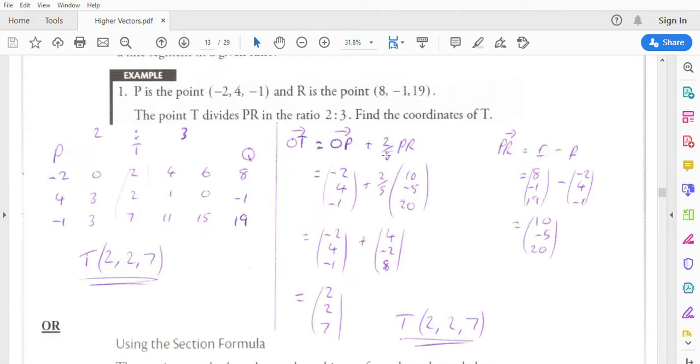Second way of doing it. We've got a vector OT. So we need to do O to P plus 2 fifths of P to R. We're at the origin. We're going to go to P. Then we're going to go 2 fifths of the way along PR. It's in the ratio 2 to 3. So we're going the first two parts out of five parts altogether. So O to T is OP plus 2 fifths of PR.